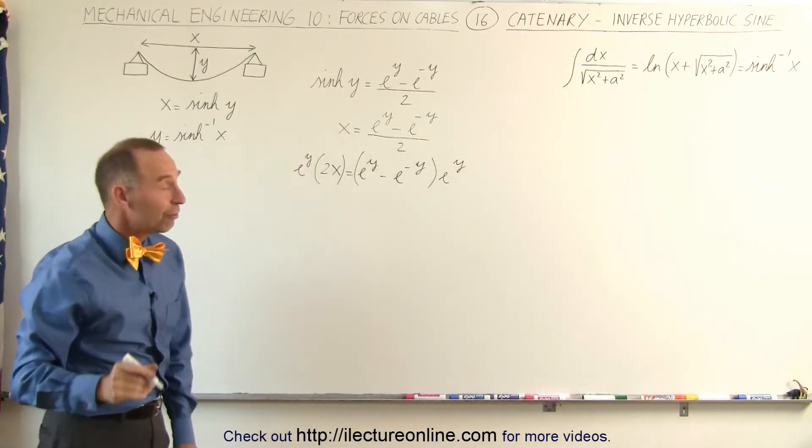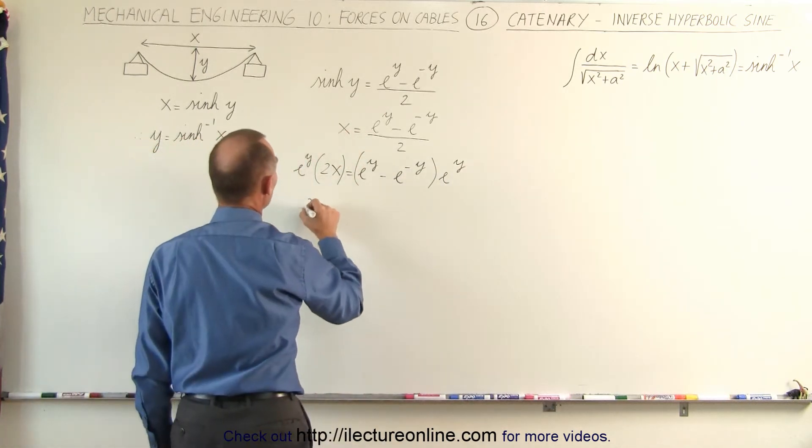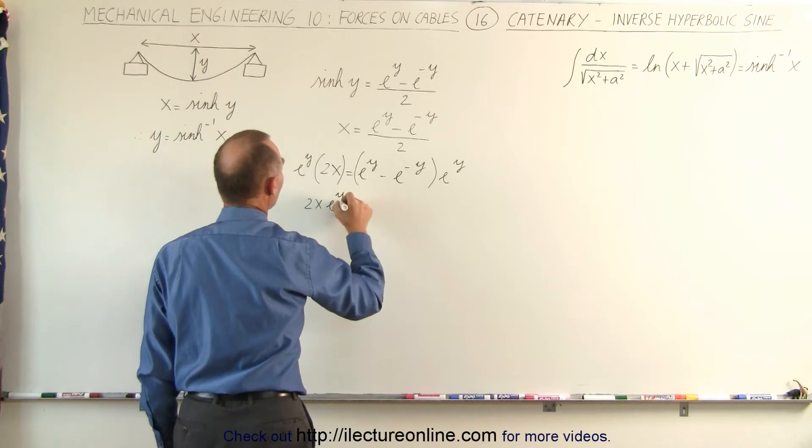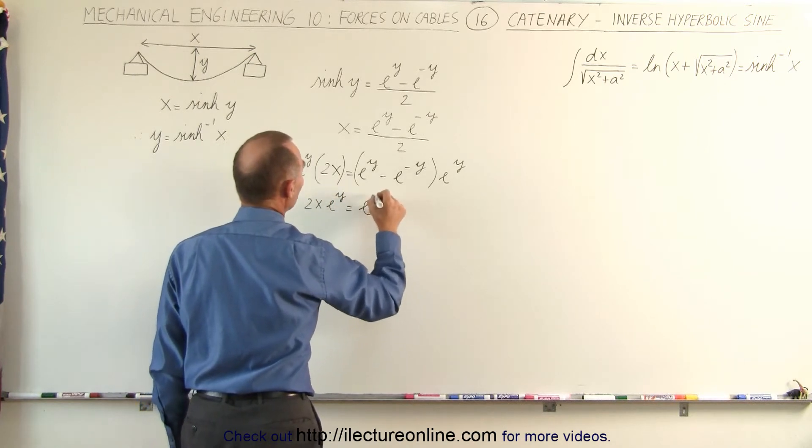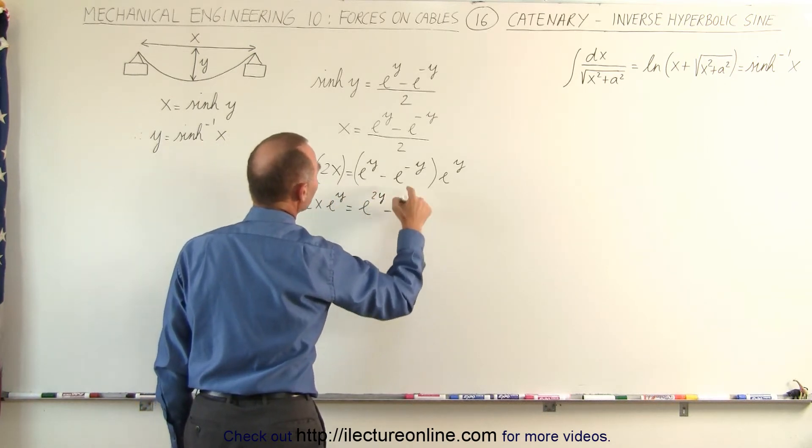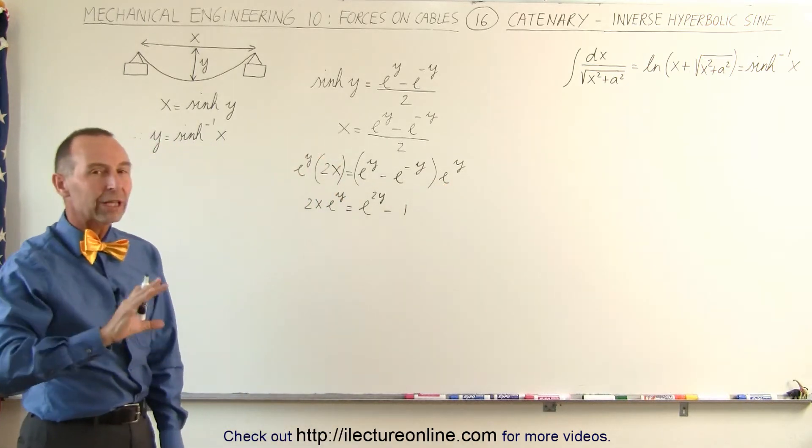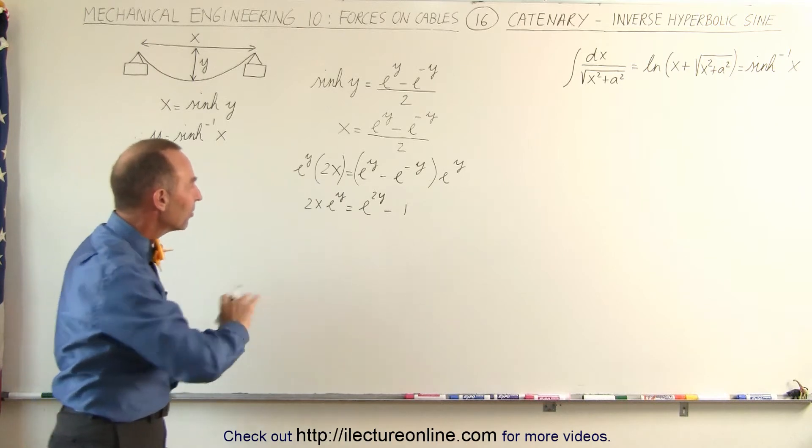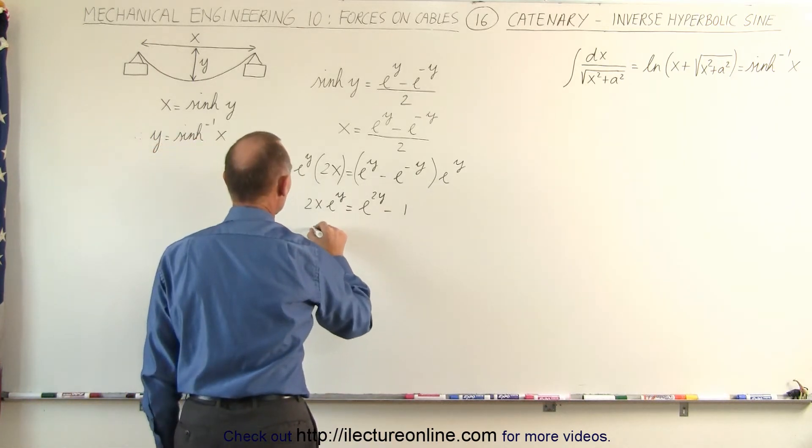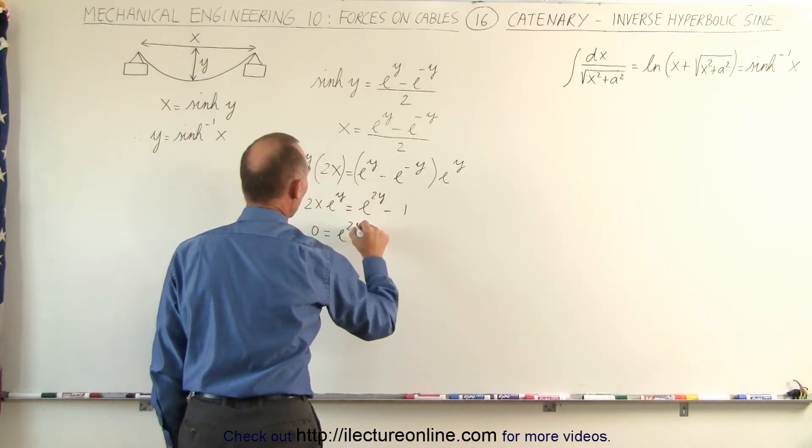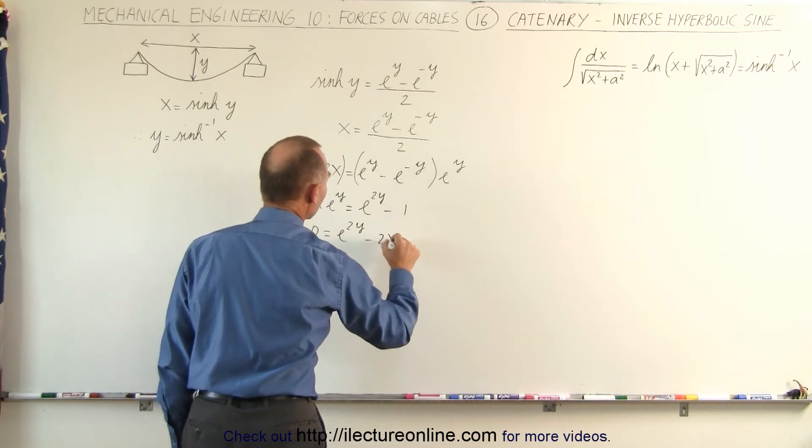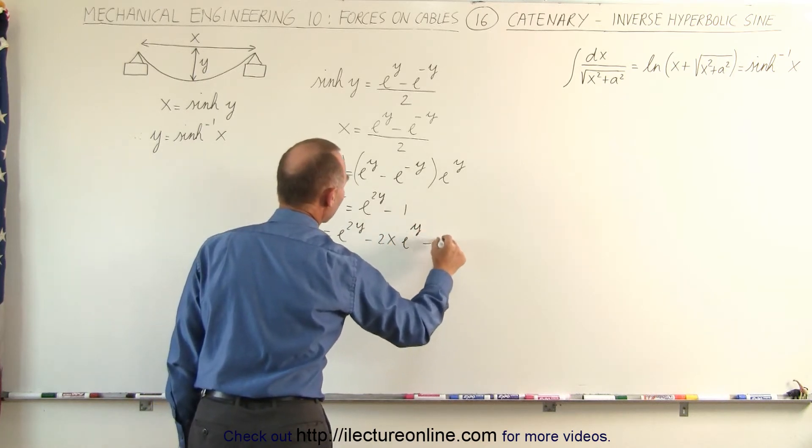And when we do that, we get the following. We get 2x e to the y equals e to the 2y minus e to the minus y times e to the y is simply 1. Moving all that to a single side set equal to 0, we get 0 is equal to e to the 2y minus 2x e to the y minus 1.